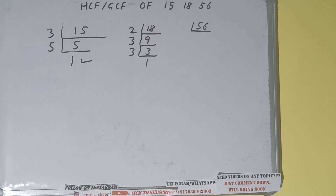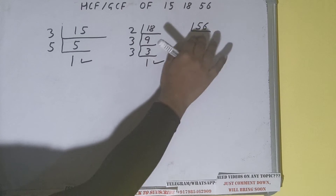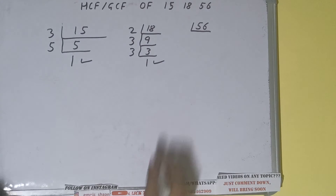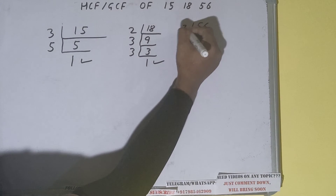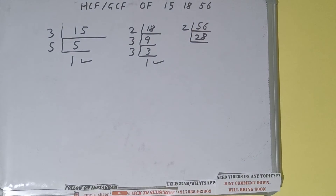3 is again divisible by 3, so we'll be getting 1. We are done with 18 as well. Now we need to do the same with the number 56.